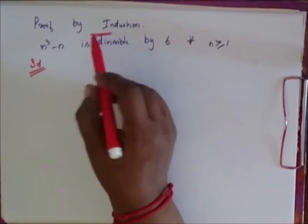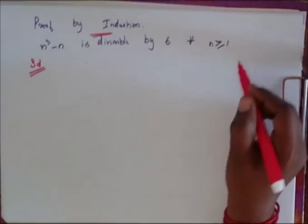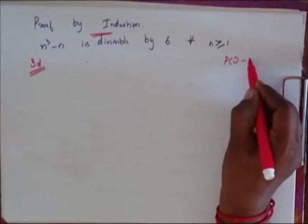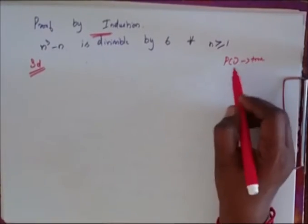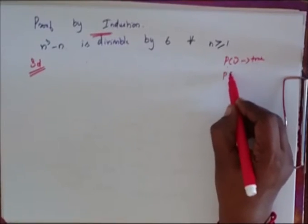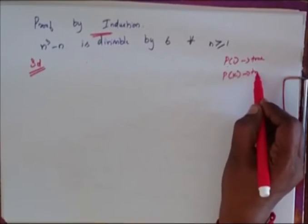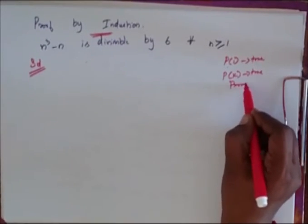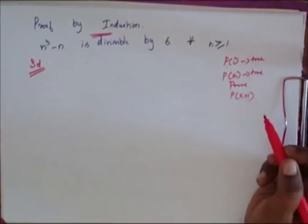Proof by induction. Whenever I use proof by induction, I have to prove that it is true for P of 1. Since it is true for P of 1, I assume that it is true for P of K, and I have to prove that it is true for P of K plus 1.